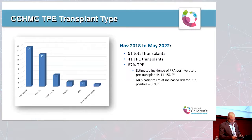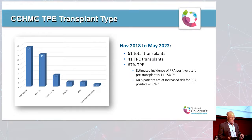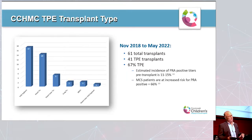During the three-and-a-half year time frame listed here, we've done 61 total transplants at Cincinnati Children's. 41 of those 61 patients — 67% — were sensitized pre-transplant and required TPE. The estimated incidence of positive PRA titers pre-transplant in the literature is 11–15%, so our incidence was initially surprising, but it matches up very well with MCS patients who are at increased risk for PRA-positive titers. The largest percentage of our patients are VAD explant patients at the time of transplant.